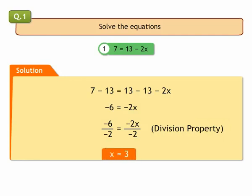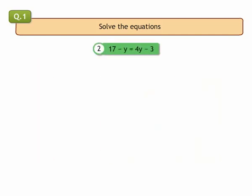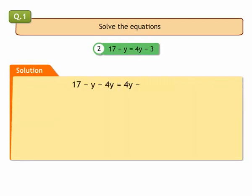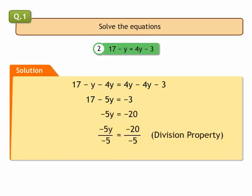2. 17 minus y is equal to 4y minus 3. We eliminate y from right-hand side by subtracting 4y from both sides of the equation. We get 17 minus 5y is equal to minus 3. Subtracting 17 from both sides of the equation, we get minus 5y is equal to minus 20. Dividing both sides of equation by minus 5, we get y is equal to 4.